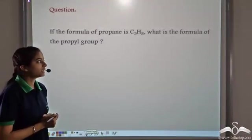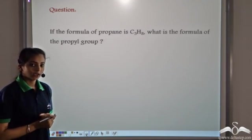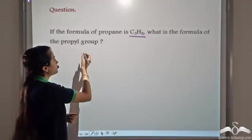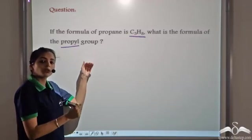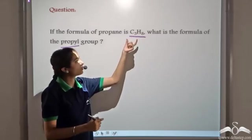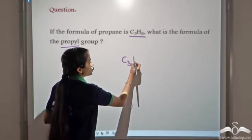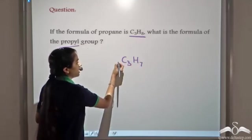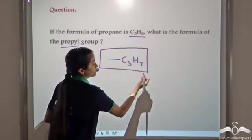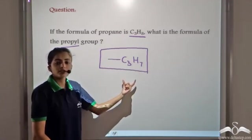If the formula of propane is C3H8, what is the formula of the propyl group? We are given the formula of propane to be C3H8. We know we get the propyl — the corresponding alkyl group — when we remove one hydrogen atom from the corresponding alkane. So if we have propane and we remove one hydrogen atom, we get C3H7 and one place is vacant. So this becomes the propyl group.